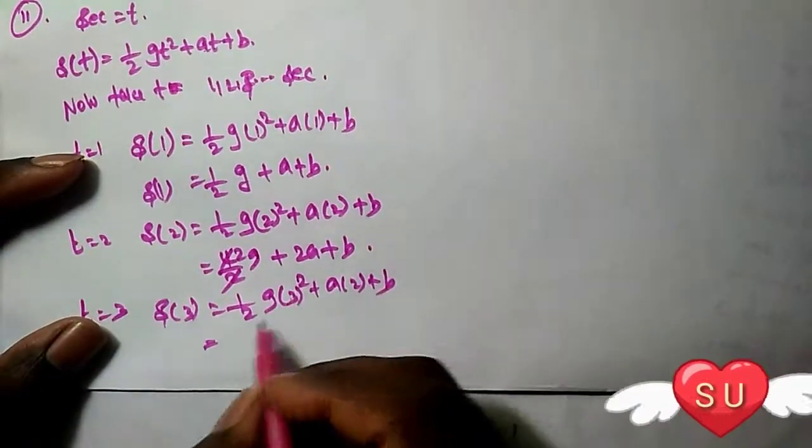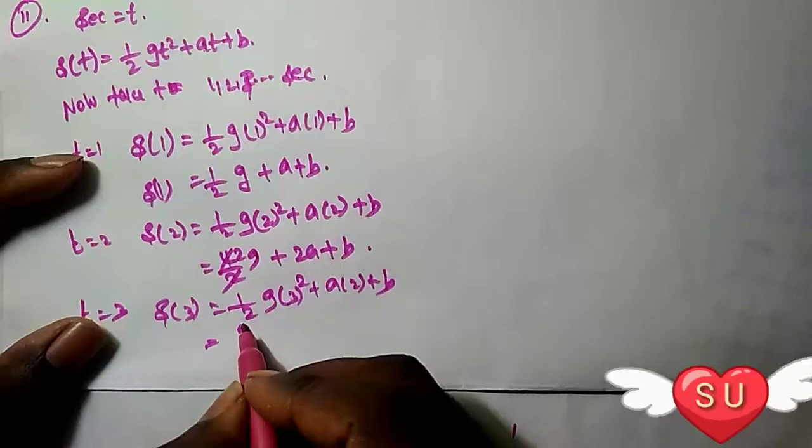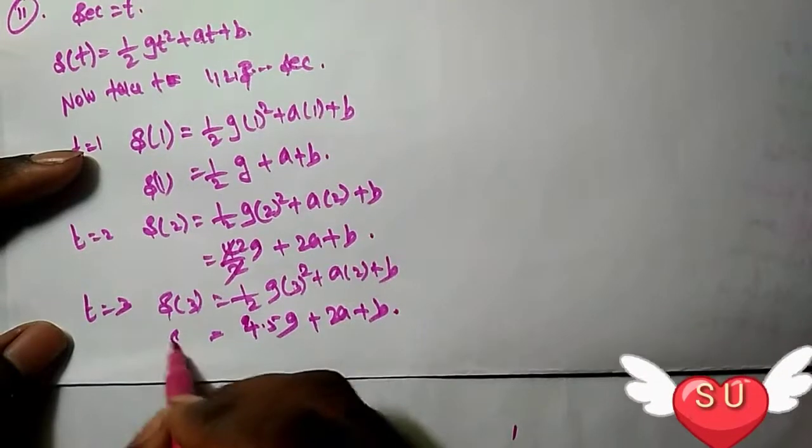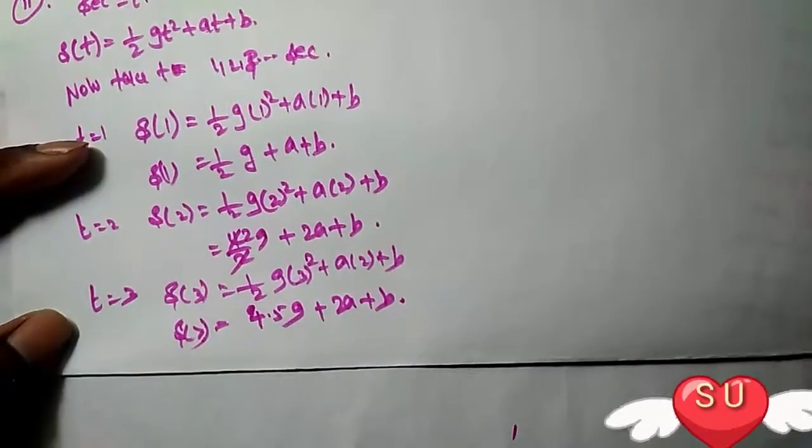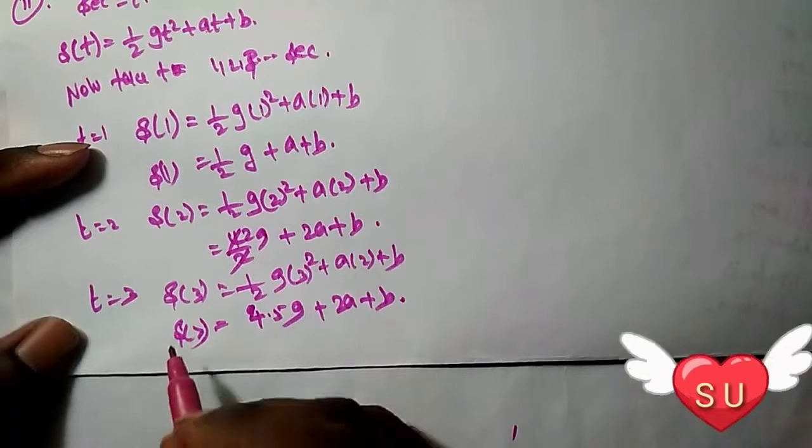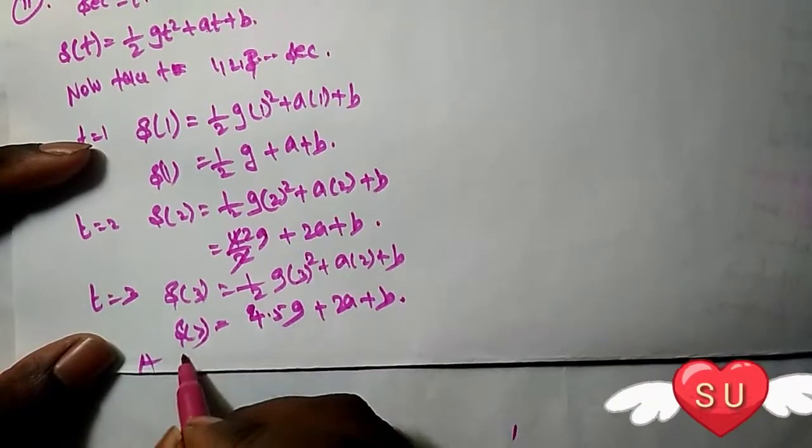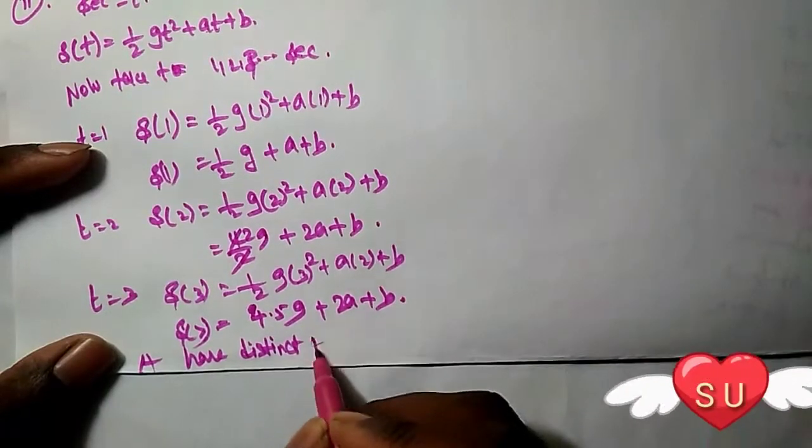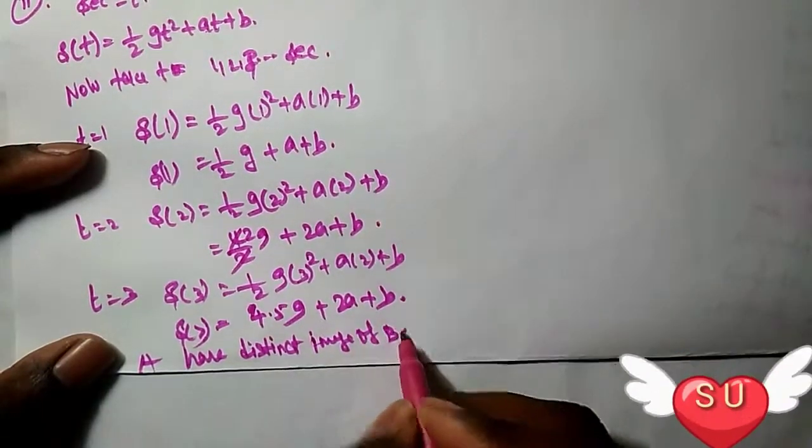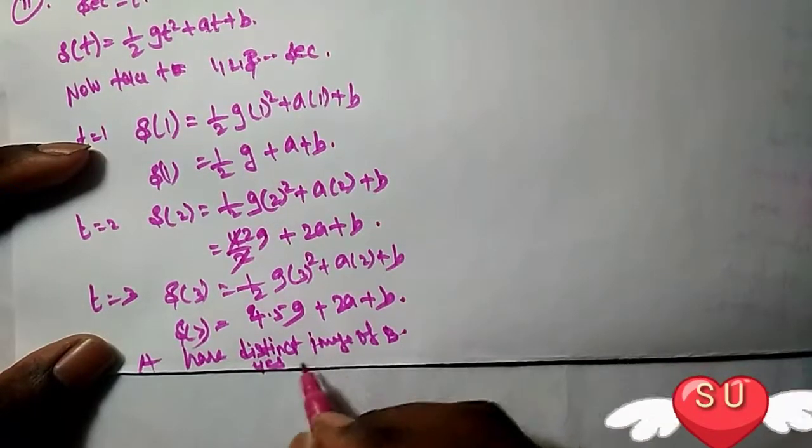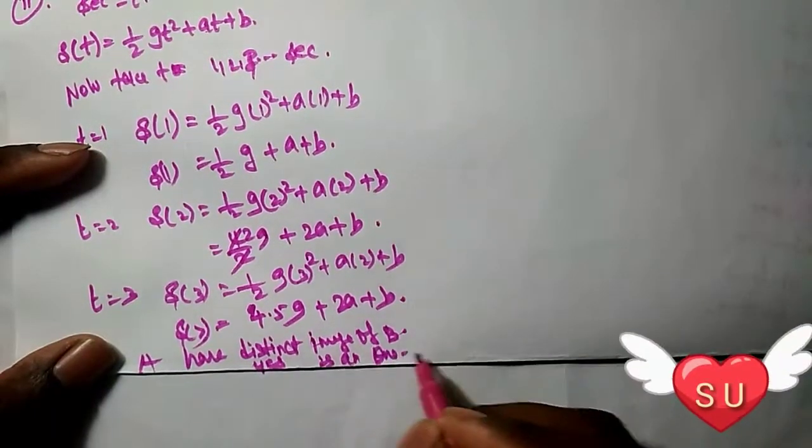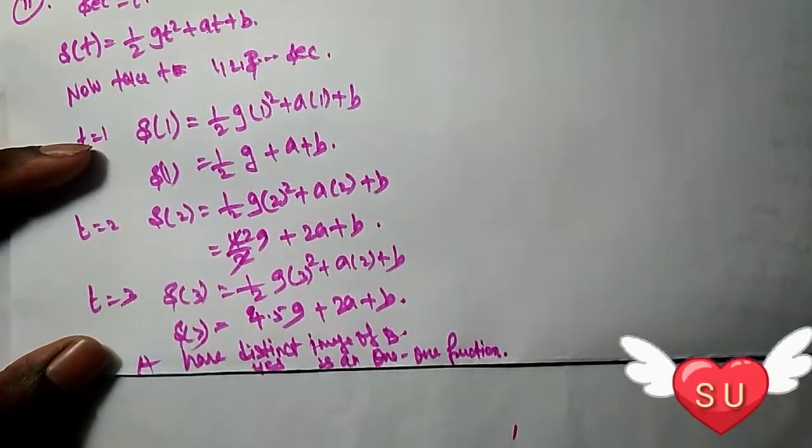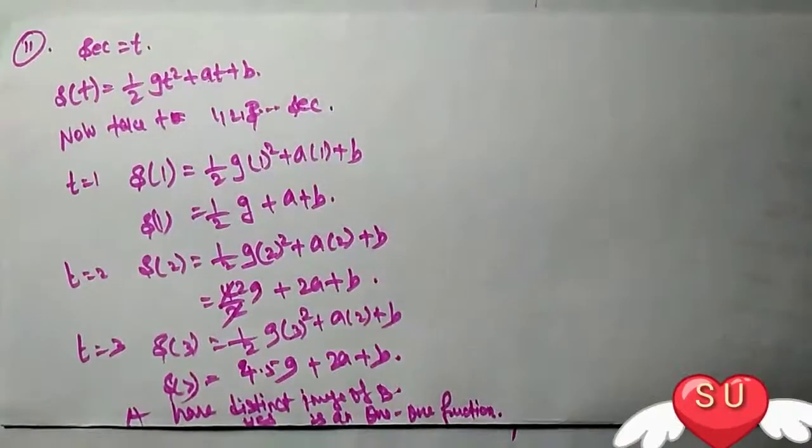This gives us S(3) = 4.5g + 3a + b. Since all the calculated distances S(1), S(2), and S(3) are different, this is a one-to-one function. Hence proved.